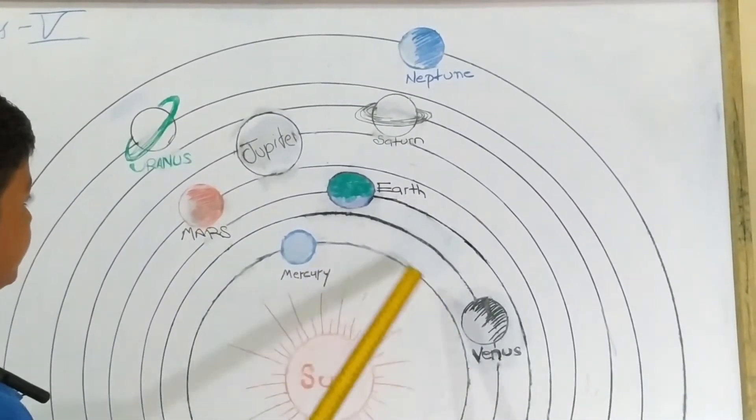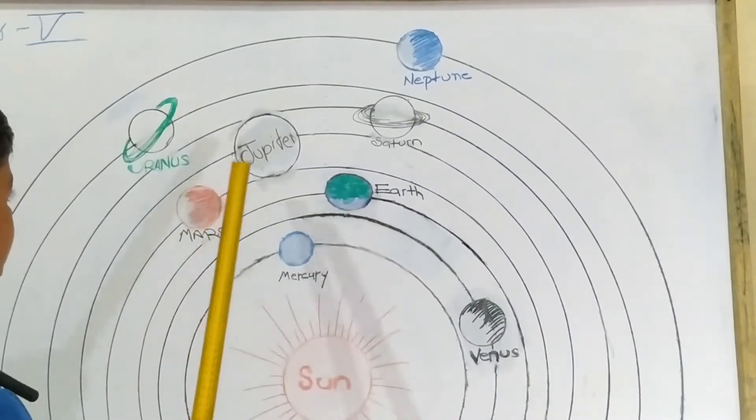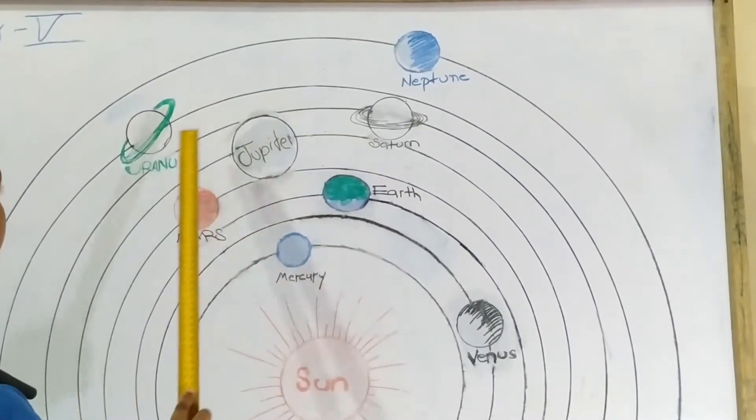Mercury, Venus, Earth, Mars, Jupiter, Saturn, Uranus, and Neptune.